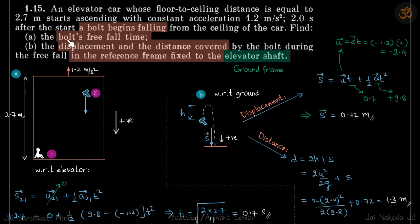Let's do the first part first where we need to find the bolt's free fall time. We are going to solve this with respect to the elevator. So our reference frame is the elevator itself. It will just appear to fall from here. We are going to do it with relative motion.